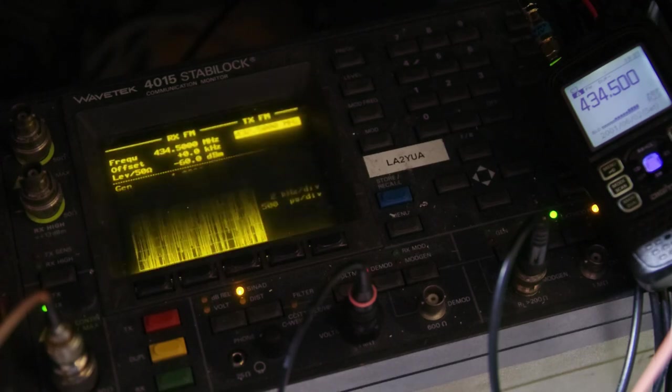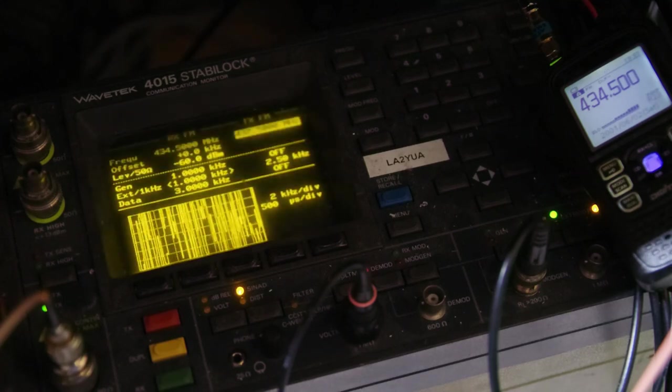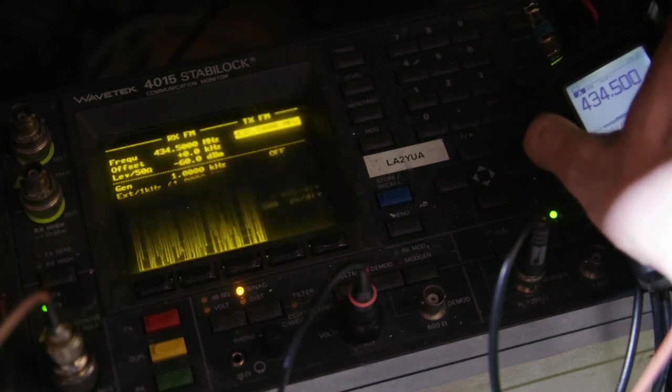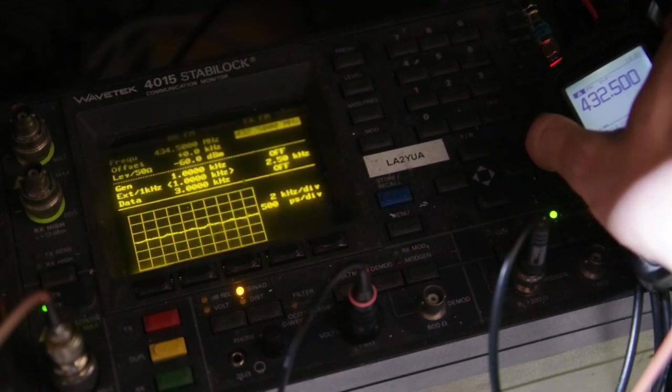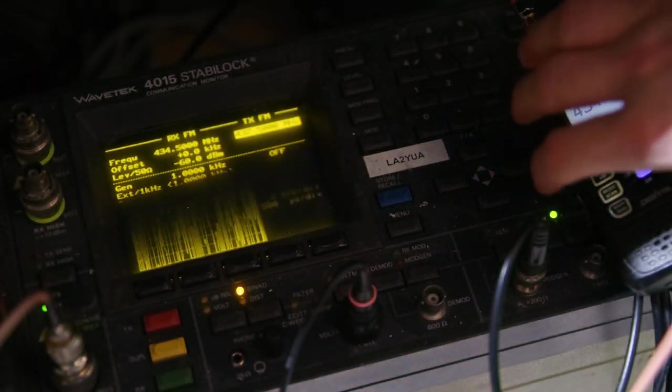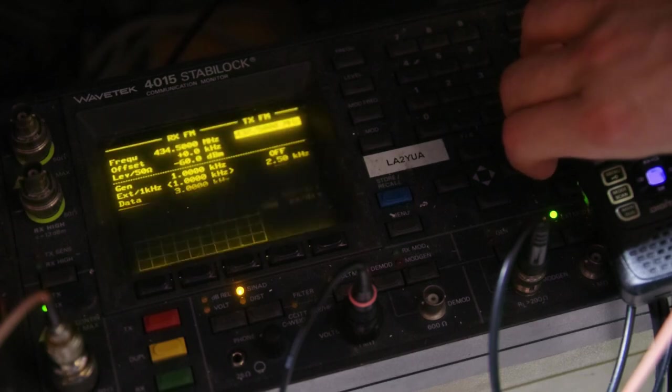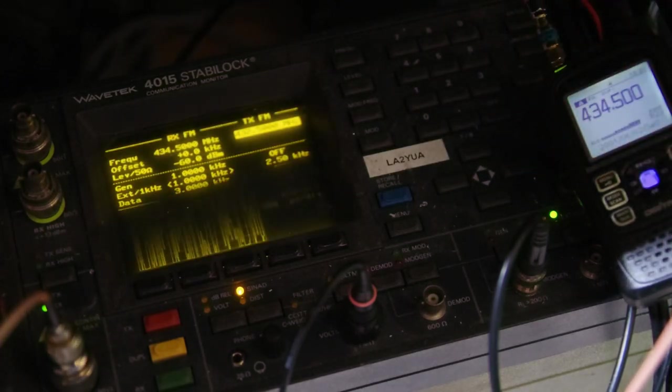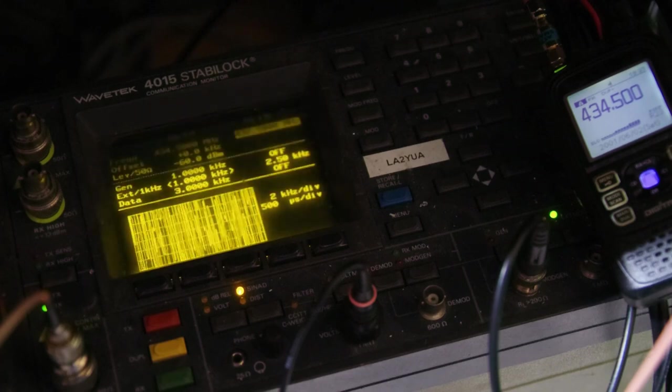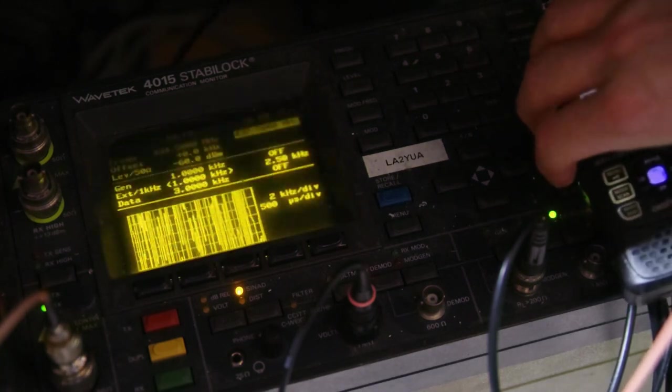It's currently configured to receive on 434.5 MHz and it's set to transmit at a minus 2 MHz split, which is pretty typical for my region. You can see this is the oscilloscope type display. If I do this, it's a Euro feature, the 1750 tone for repeater access. Considered obsolete nowadays, but still supported occasionally, and a built-in feature on the European models.